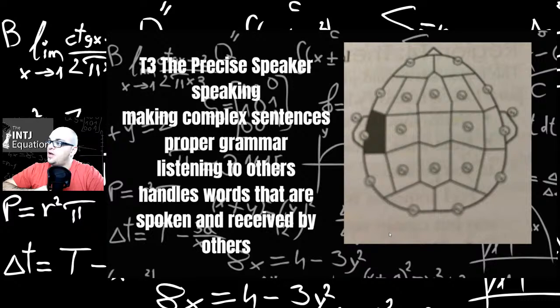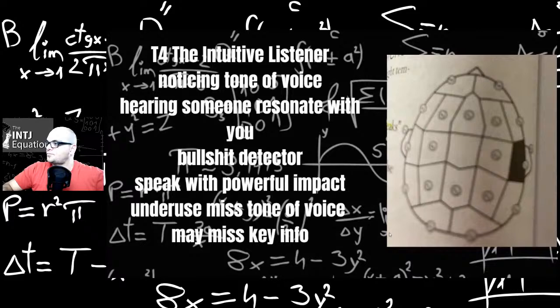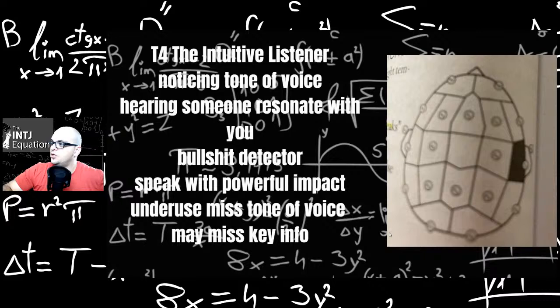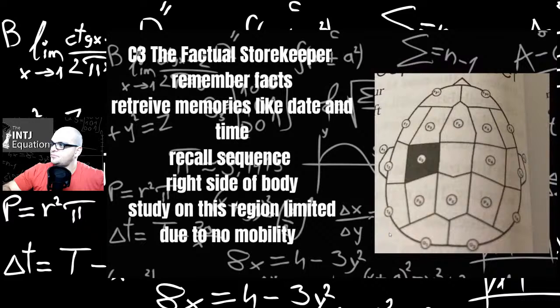T3, the precise speaker. Definitely something I don't have much of. Speaking, making complex sentences, proper grammar, listening to others. Handles words that are spoken and received by others. T4, the intuitive listener: notices tone of voice, hearing someone resonate with you. Basically it's a bullshit detector. Speak with powerful impact. Underused miss tone of voice, may miss key info. Kind of maybe INFJ-ish.